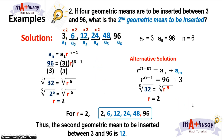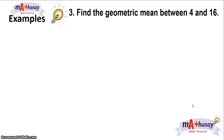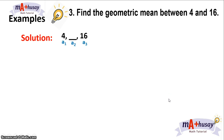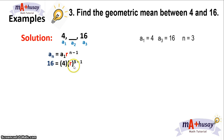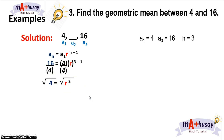Let's take example number 3: Find the geometric mean between 4 and 16. We are only going to insert one geometric mean between 4 and 16. So the first term is 4, the third term is 16, and n is 3. Using the geometric sequence formula, we get 16 equals 4 times r raised to 3 minus 1.